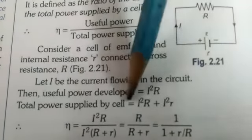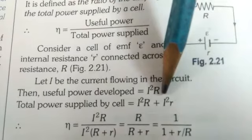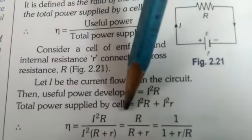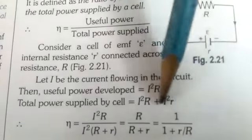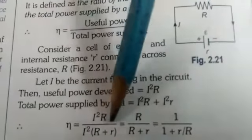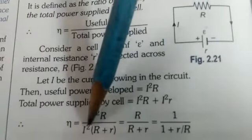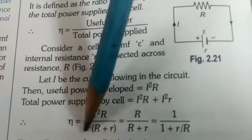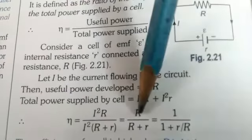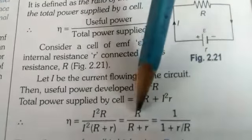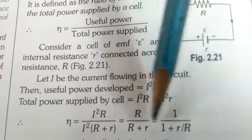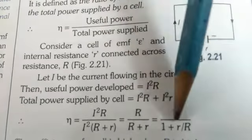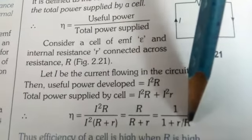Only this external resistance R device is using the power. So, useful power is I square R, and power supplied is the combination of power of both. So, I square R plus I square small r, by putting the value, taking I square as common and cancelling that, we get this equation R upon R plus r. Then, this R, same here, so this equation can be written in this form: 1 upon 1 plus small r upon capital R.